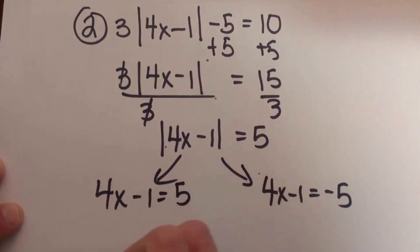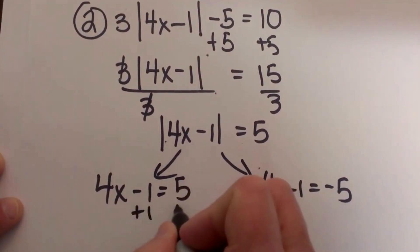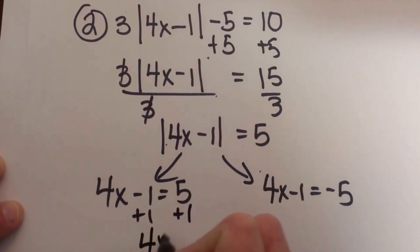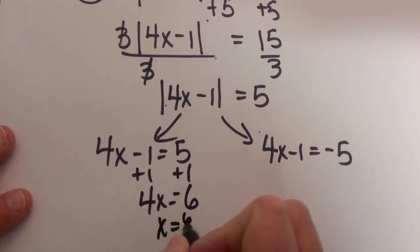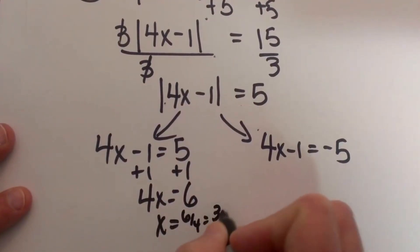So these are just two-step equations. You add 1, so you get 4x equals 6, so x is equal to 6 fourths or 3 halves.